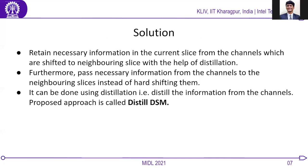To address the loss of spatial information from the current slice, we propose to retain information in the current slice from the channels which are shifted to the neighboring slice, with the help of distillation. Furthermore, we propose to pass necessary information from the channels to the neighboring slice instead of hard shifting them. This process of retaining and passing necessary information is done using distillation, and the proposed approach is called distilled DSM.